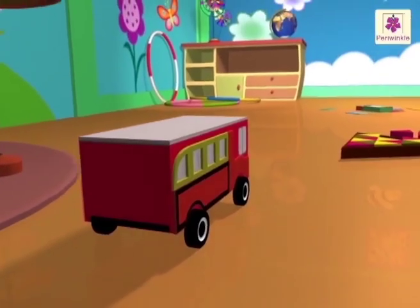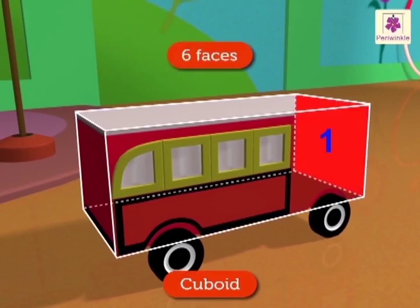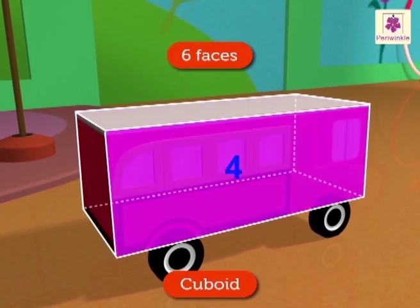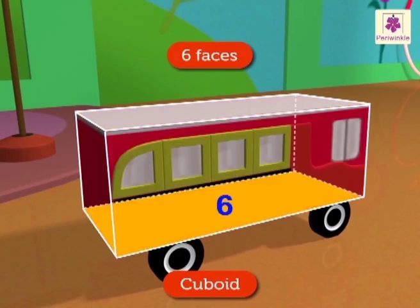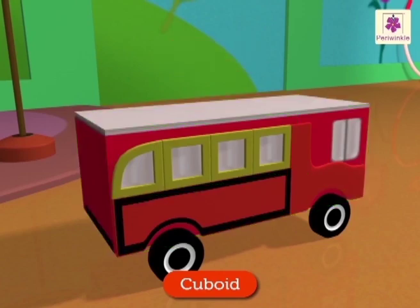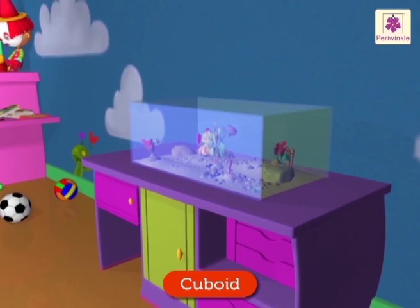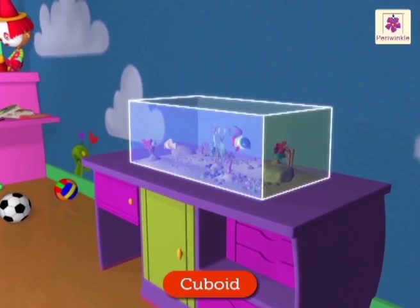The red toy bus is cuboid in shape. A cuboid also has six faces, 12 edges, and eight vertices. There are so many fish in the fish tank — the fish tank is also cuboid shaped.